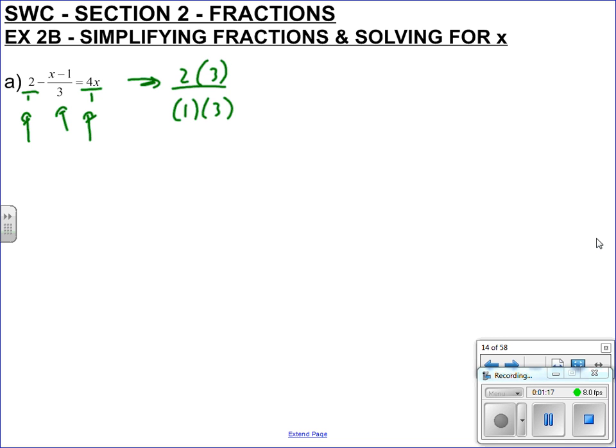Remember, that's the same as timesing it by 1. Top by 3, bottom by 3, but this one already has a 3. Top by 3, bottom by 3. So this gives me 6 over 3, minus x take 1 over 3, equals 3 times 4x, so that's 12x over 3.